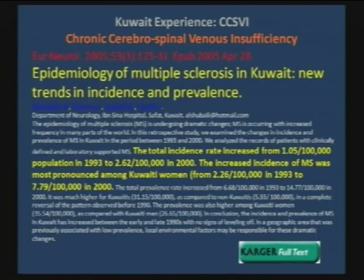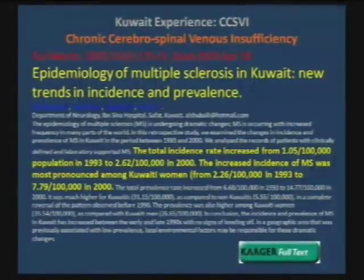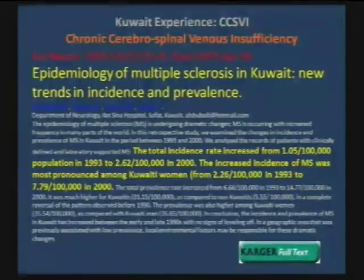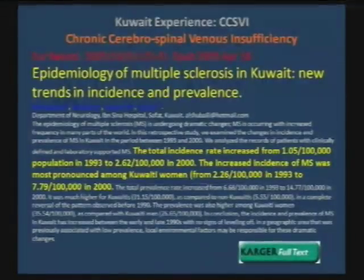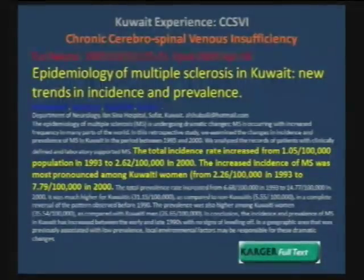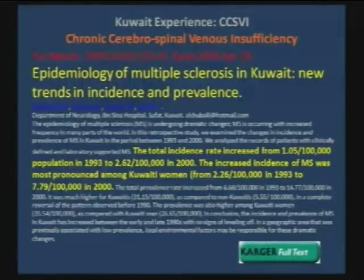A paper was published in 2005 from Kuwait in the Journal of European Neurology by a neurologist group, showing that the incidence of MS is on the rise, especially among young Kuwaiti women — increasing from 2.26 per 100,000 in 1993 to 7.79 in 2000. That's a very high number, and it just shows the urgency that things need to be done. That was one of our motivations to start this in Kuwait.